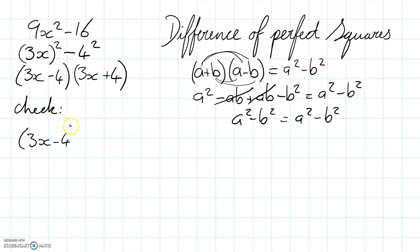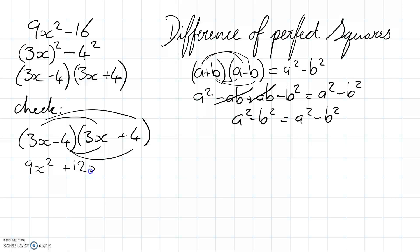3x minus 4, 3x plus 4, distributive law. 3x times 3x is 9x², 3x times positive 4 is plus 12x, 3x times negative 4 is minus 12x, and 4 times 4 with the negative gives us negative 16.